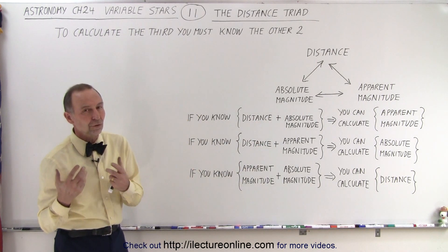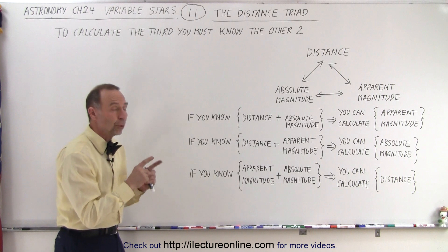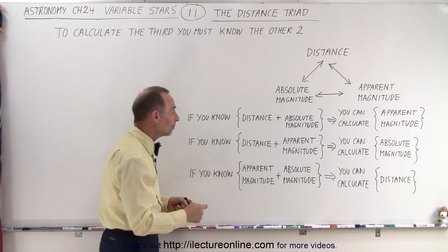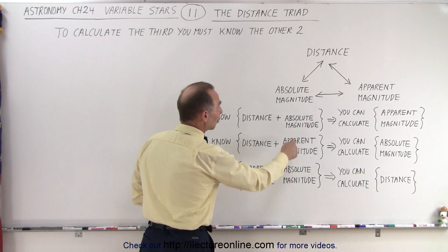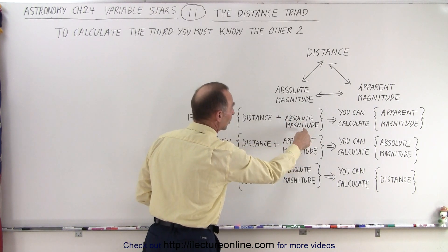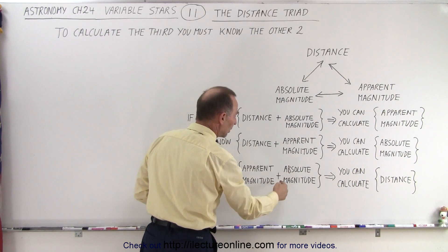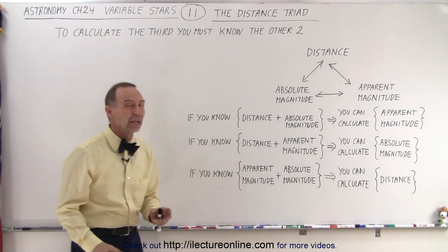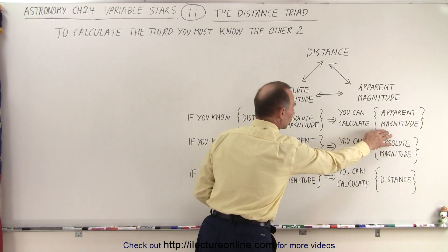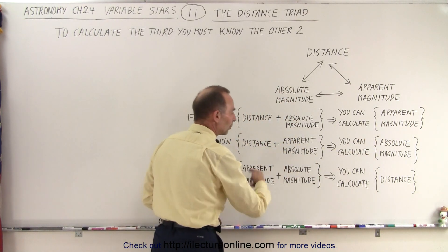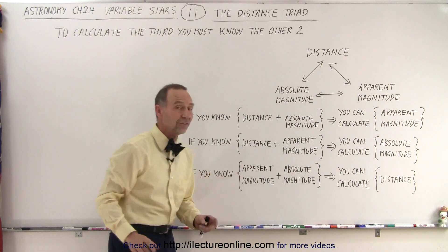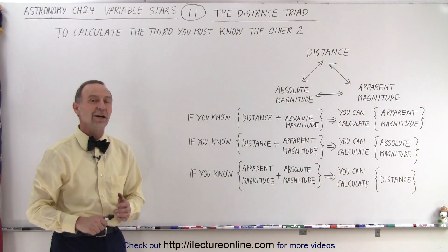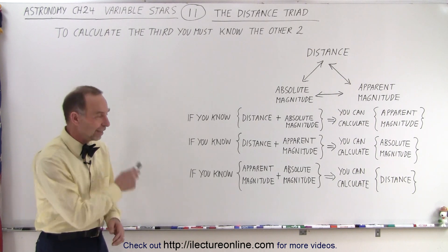The idea is to figure out the third, you must know at least the other two. That's the challenge in astronomy. Most of the time, the challenge is in determining the absolute magnitude, to calculate the other. The apparent magnitude we can usually measure, so then it comes down to just finding the distance. And remember, finding the distance is the most challenging aspect of astronomy. And that is how it's done.